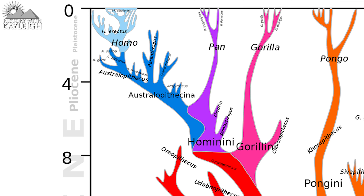The genus Australopithecus consists of: Australopithecus africanus, Australopithecus deyiremeda, Australopithecus garhi, Australopithecus sediba, Australopithecus afarensis, Australopithecus anamensis, and Australopithecus bahrelghazali. The most famous species is Australopithecus afarensis, which likely gained its fame through the discovery of the extremely well-preserved partial skeleton known as Lucy, discovered in 1974 by paleoanthropologist Donald Johanson and then-graduate student Tom Gray.